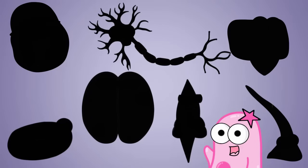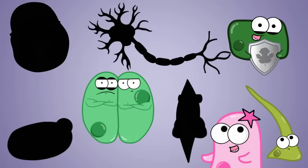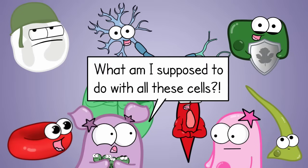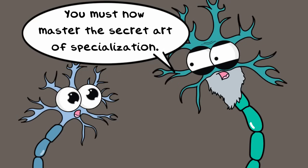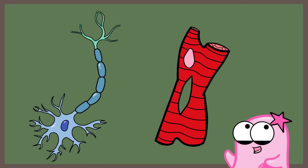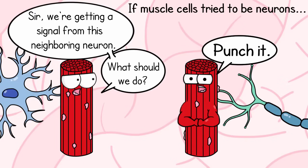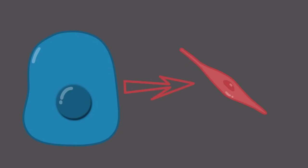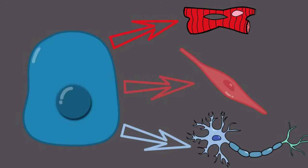We've mentioned a lot about specialized cells — specialized plant cells, specialized animal cells, so many kinds of specialized cells. But have you ever wondered how they get specialized? How does a neuron or a muscle cell in your body have the structure and function they have? They're so specialized for the function they perform. This video is going to talk about how cells differentiate into other cells, which basically means how cells become specialized.